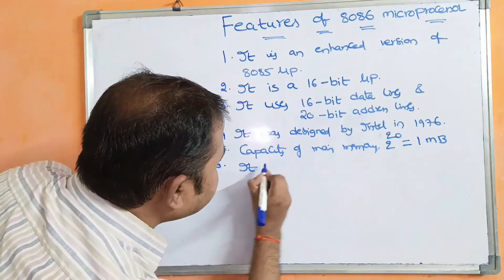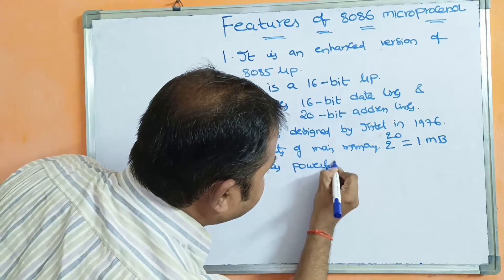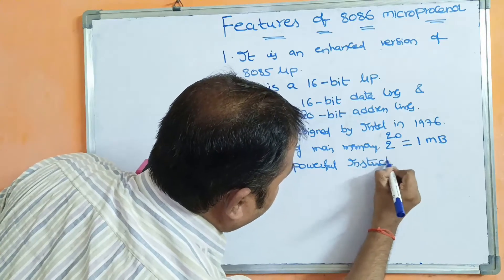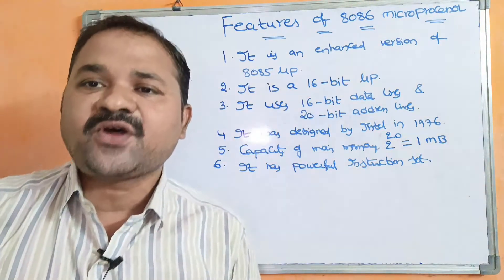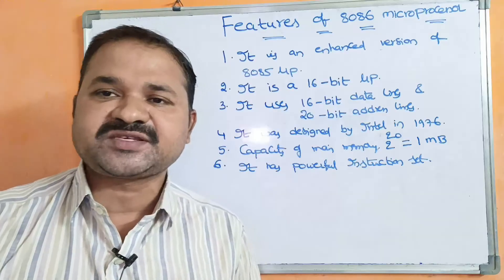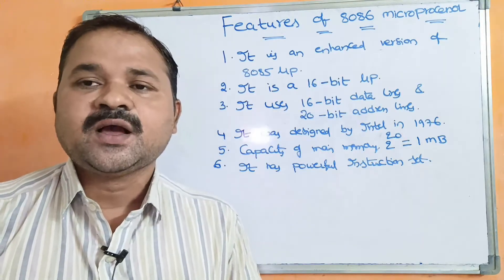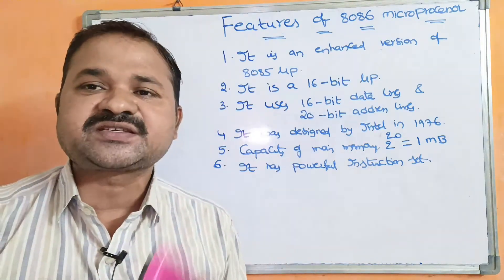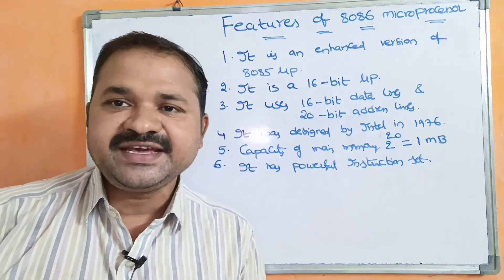The 8086 has a powerful instruction set. It supports a vast number of instructions compared to the 8085. For example, the 8085 cannot perform multiplication and division operations, whereas the 8086 performs them very easily.